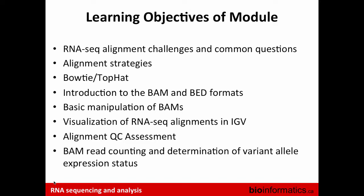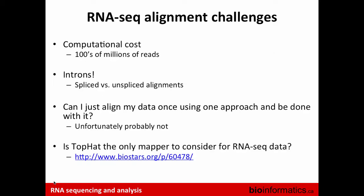The objectives for this section are to go over some of the challenges we face with RNA-seq alignments, alignment strategies, and the tool of choice — Bowtie and TopHat for this workshop. I'll introduce you to the BAM and SAM formats, some basic manipulations of BAM files, visualization, and then alignment QC metrics you can use to assess library quality, including a bit on read counting if you're trying to call variants from RNA-seq.